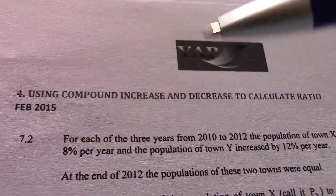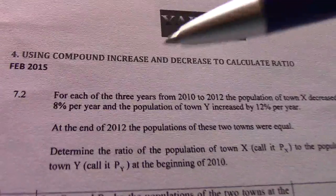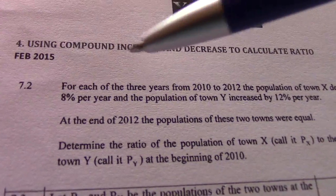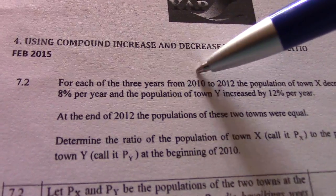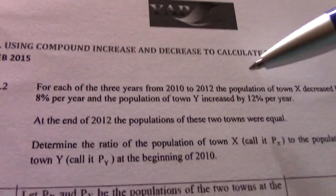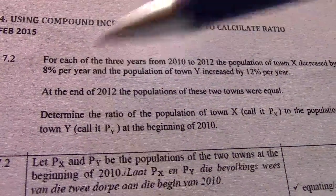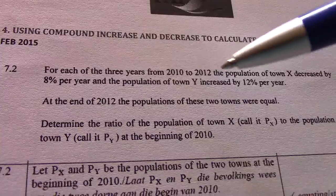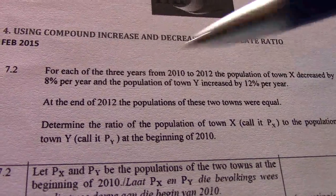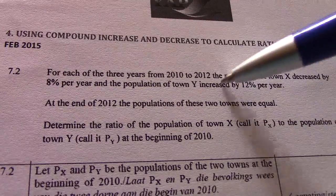The concept is where we use compound increase and decrease to calculate a ratio. This is from February 2015. For each of the three years from 2010 to 2012, the population of town X decreased by 8% per year, and the population of town Y increased by 12% per year. So we have a decrease and an increase for town X and Y.